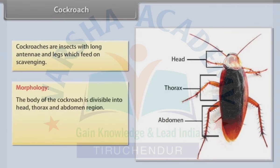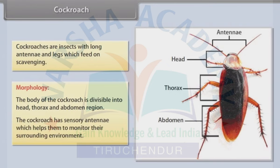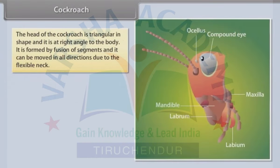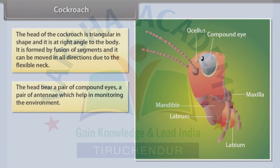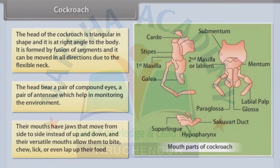Cockroach: Cockroaches are insects with long antennae and legs which feed by scavenging. The body of the cockroach is divisible into head, thorax and abdomen. The head is triangular in shape and at right angle to the body, formed by fusion of segments and movable in all directions due to the flexible neck. The head bears a pair of compound eyes and a pair of antennae which help in monitoring the environment. Their mouths have jaws that move from side to side, and their versatile mouths allow them to bite, chew, lick or even lap up their food.